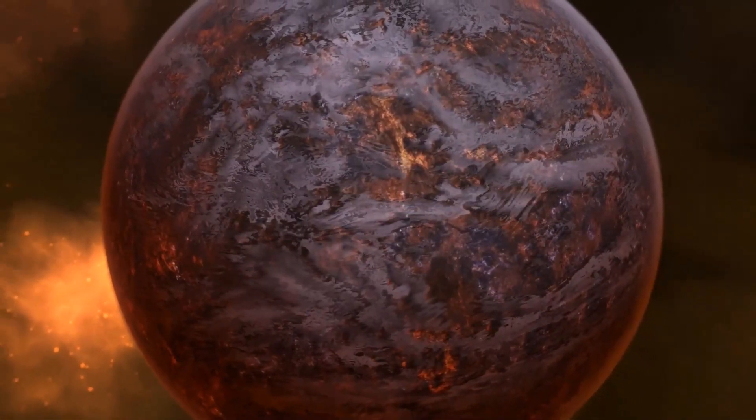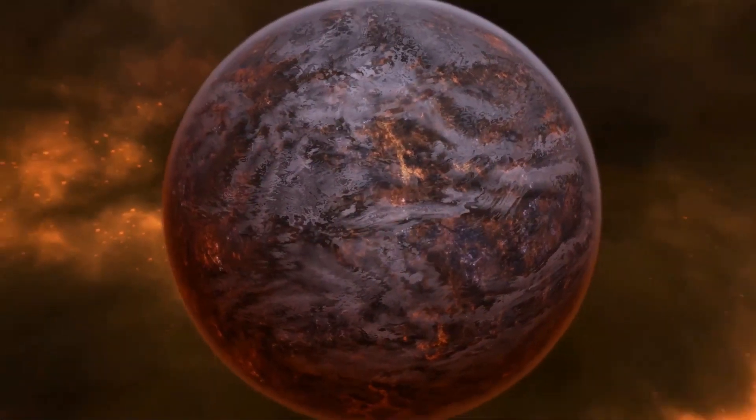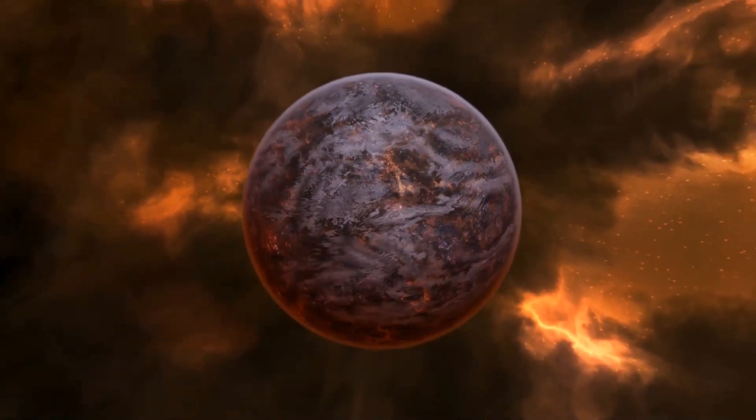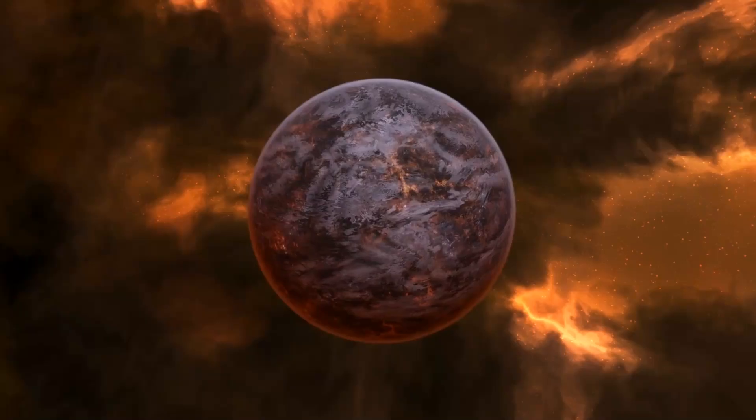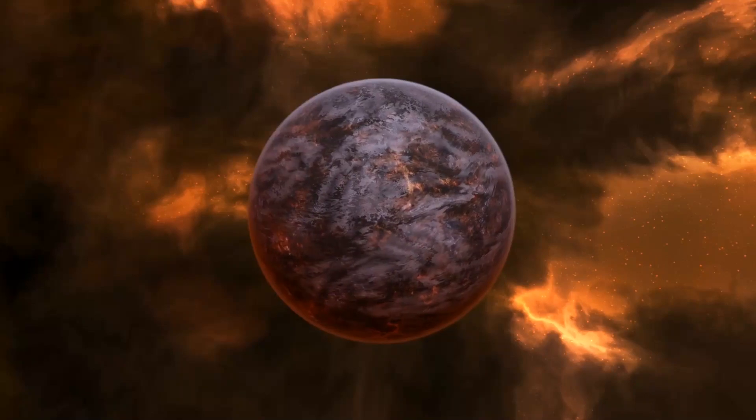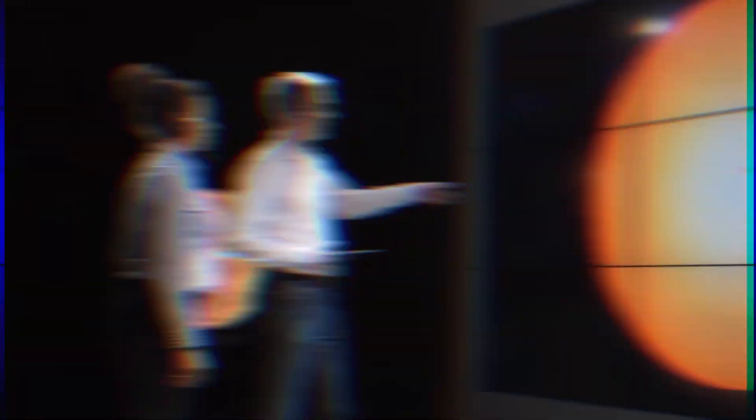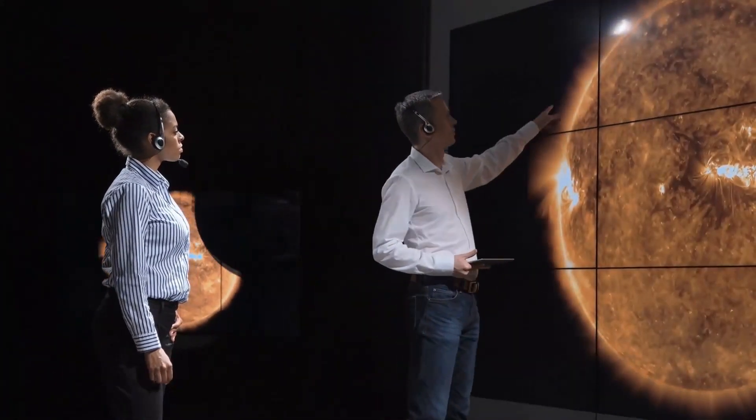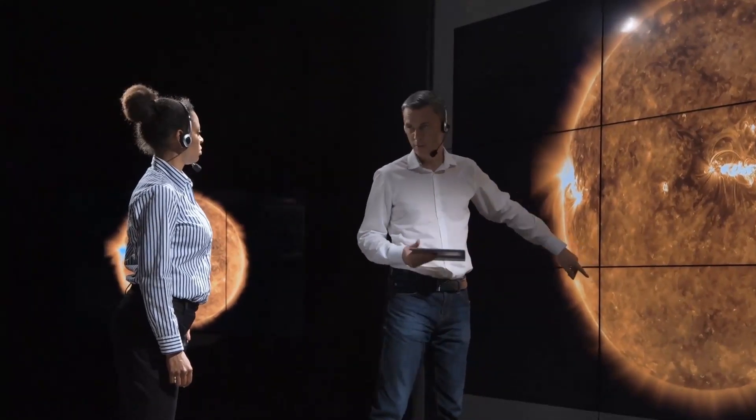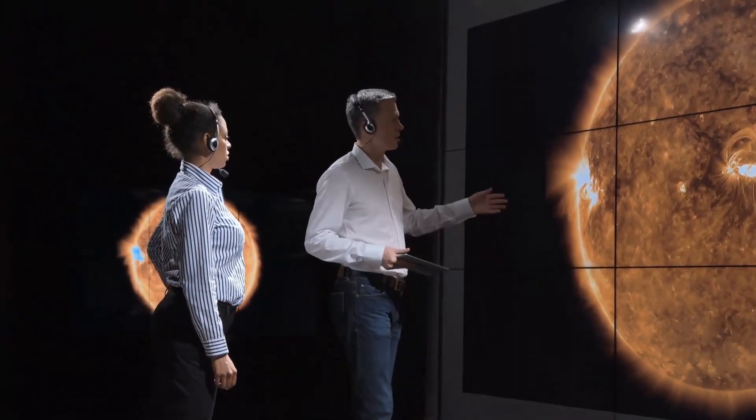So far, astronomers have discovered over 5,000 exoplanets, including hundreds of potentially habitable ones, using indirect methods that measure how a planet affects its nearby star. These measurements can give astronomers information on the mass and size of an exoplanet, but not much else.